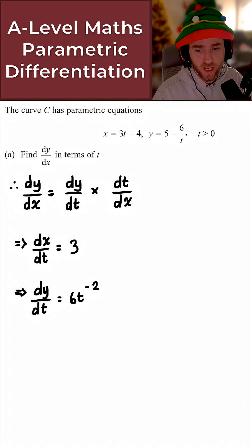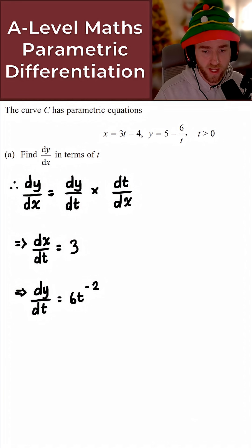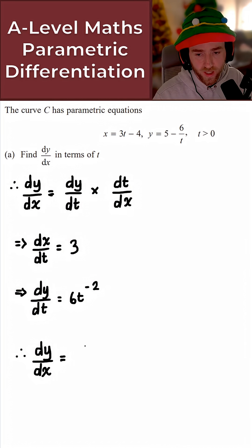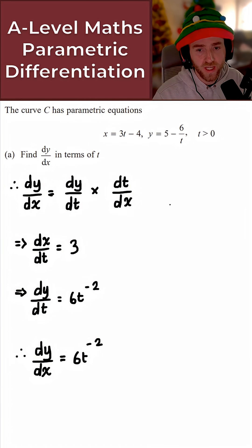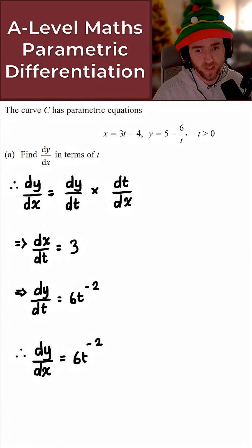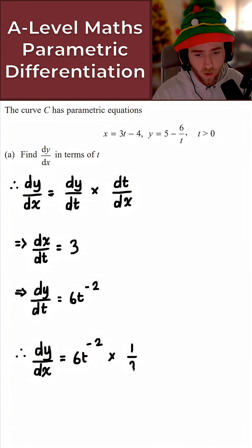Now that we've found dy/dt and dx/dt, we can easily find dy/dx. Putting all this together: dy/dt is 6t to the minus 2, times dt/dx. We have dx/dt, so we just simply take the reciprocal of dx/dt to get dt/dx.